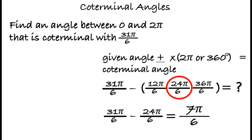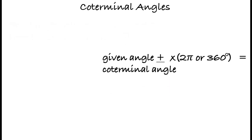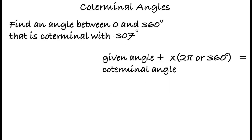This is starting to make some sense, but can we do an example where we're given a value in degrees next? Sure. Let's find an angle between 0 degrees and 360 degrees that is coterminal with negative 307 degrees. Since this value is below the given range, we need to add a multiple of 360 degrees to find the value of the coterminal angle.